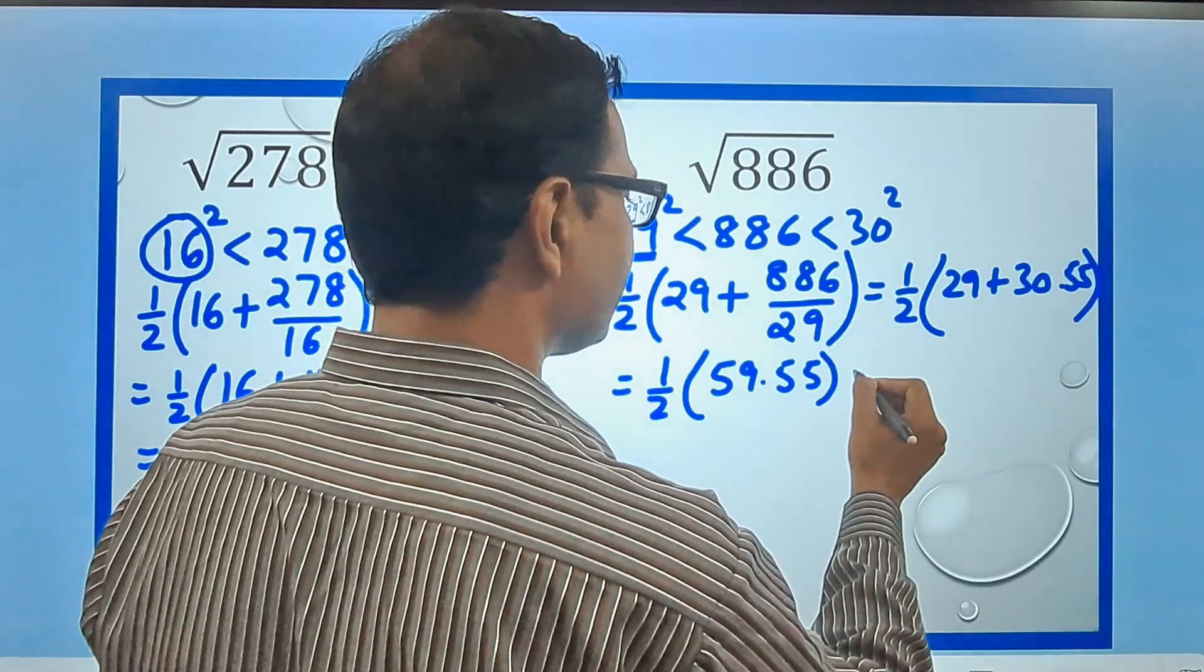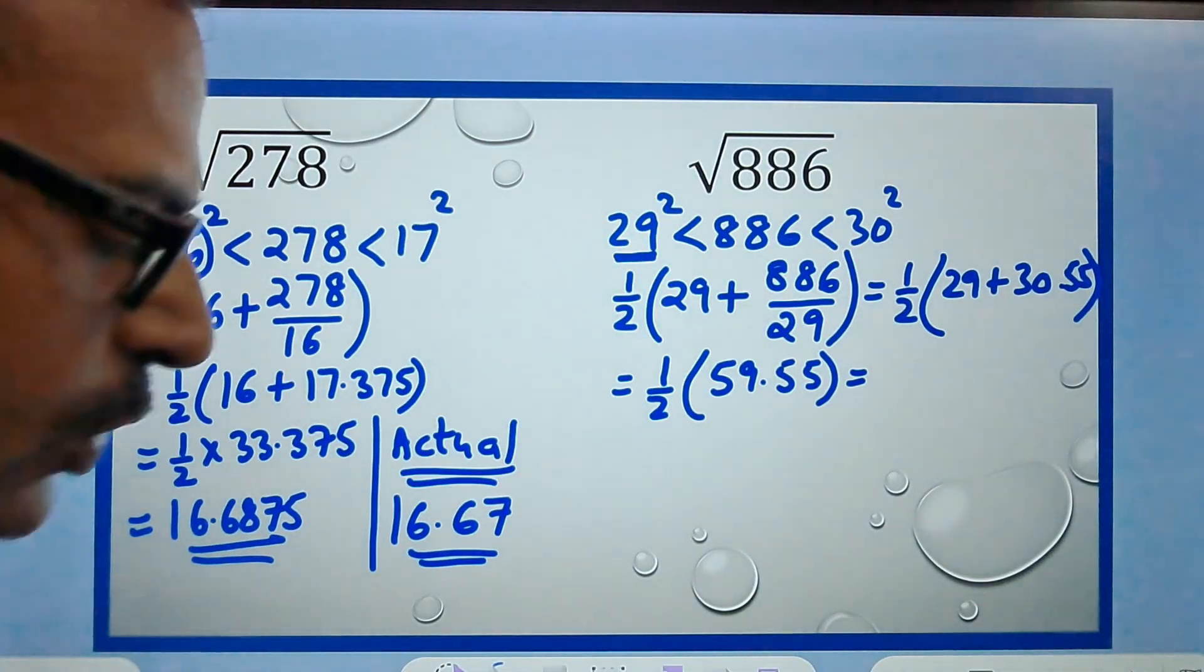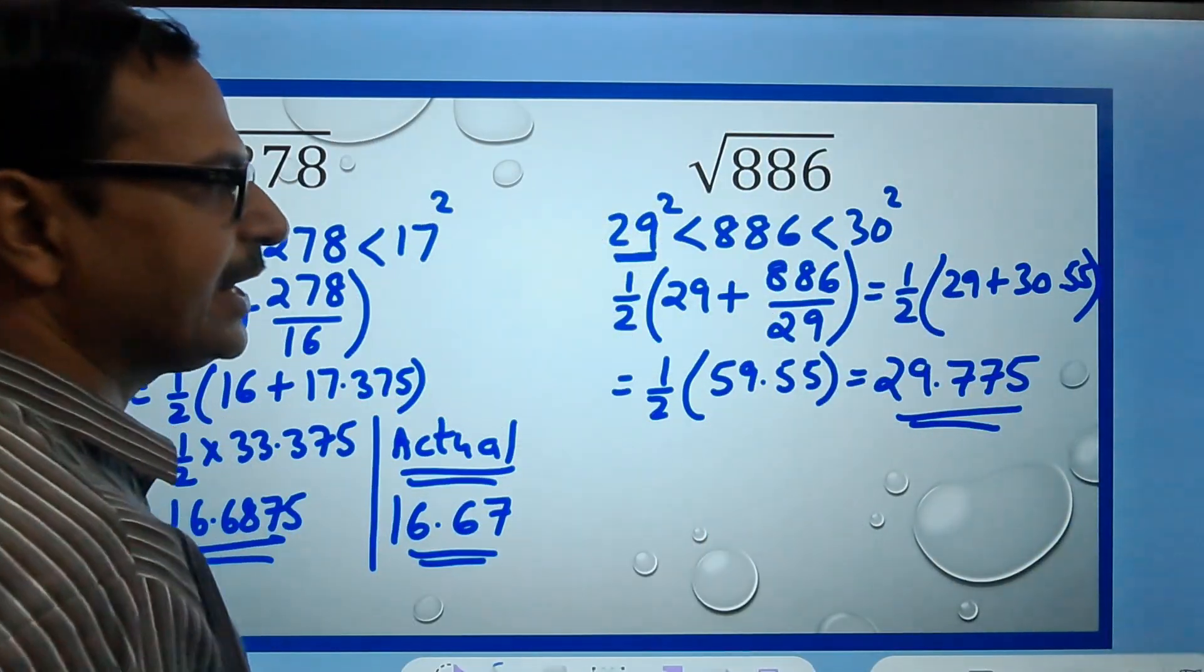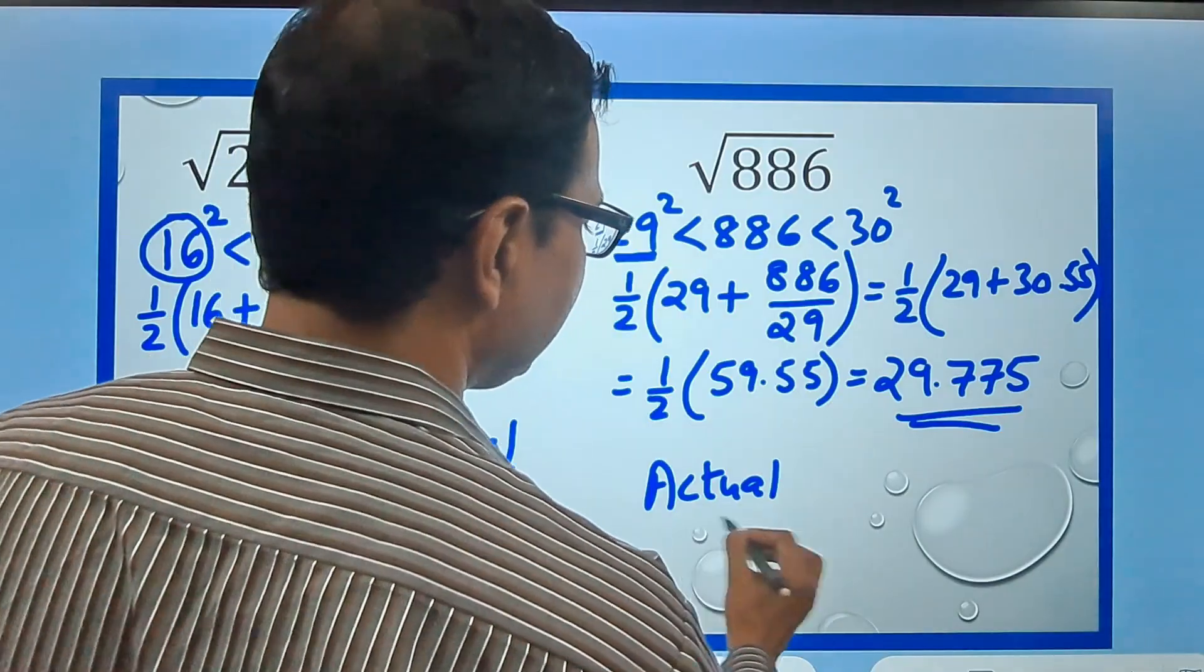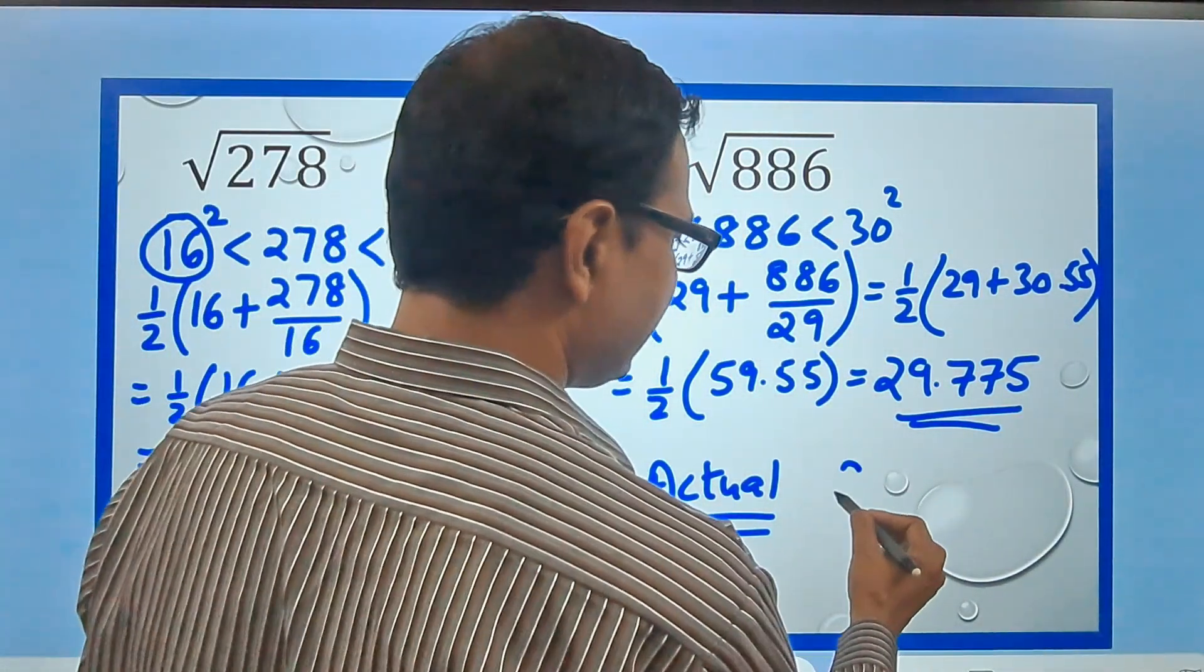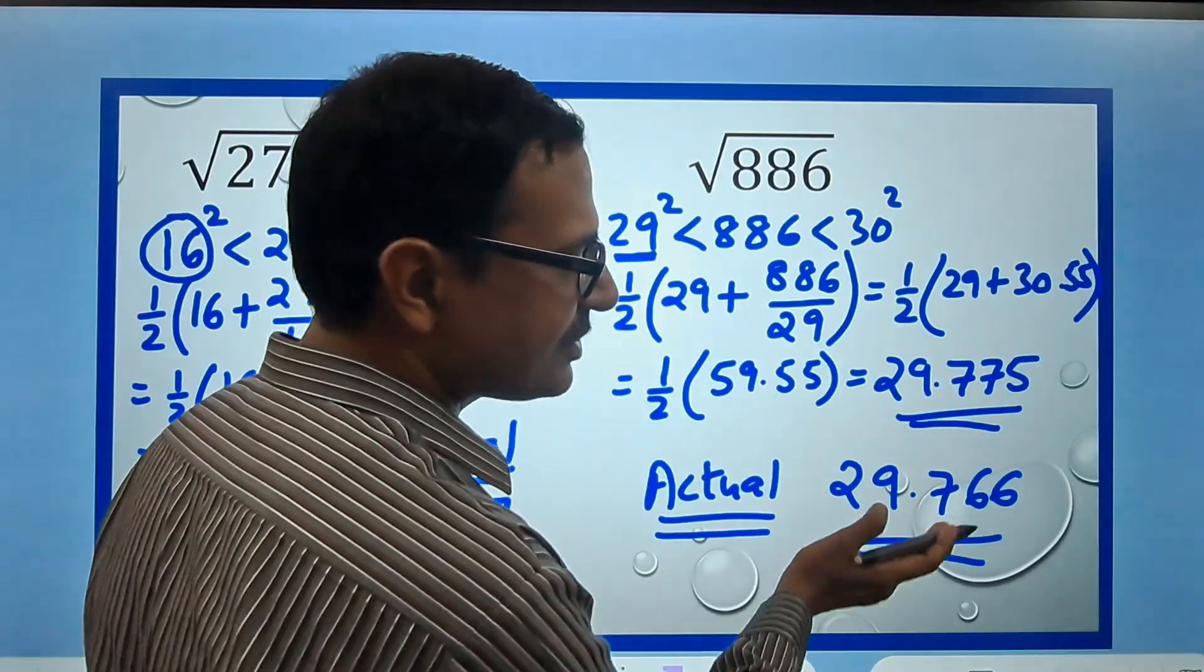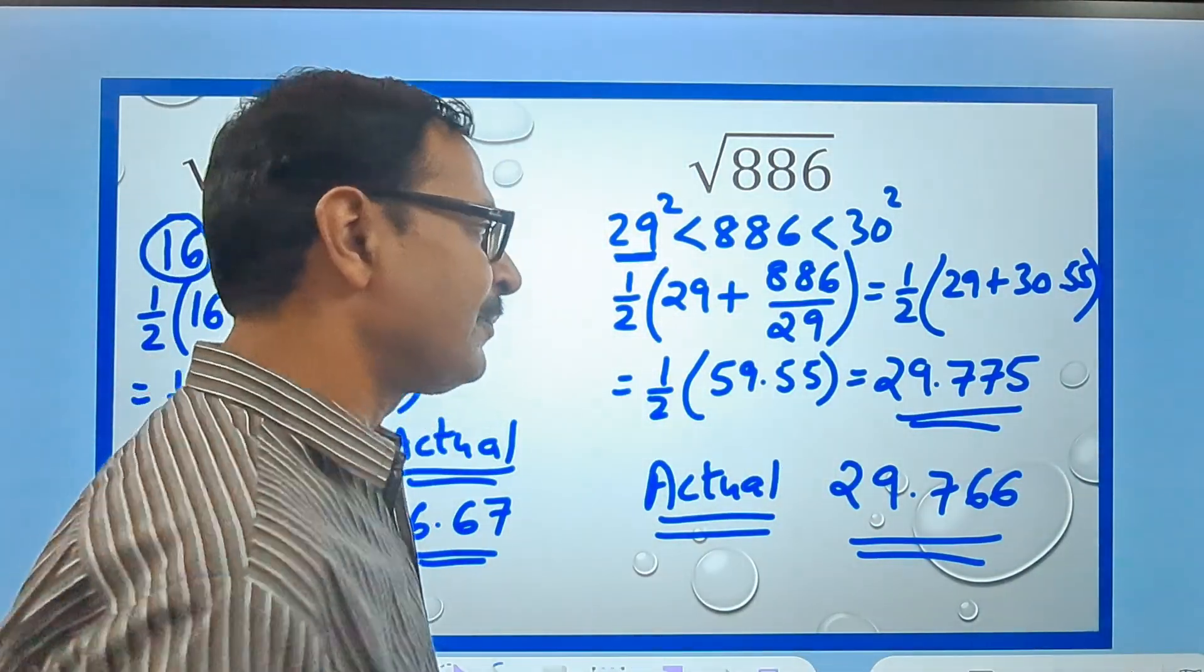The answer comes out to be, if you divide 59.55 by 2, 29.775. Now this is the approximate value of the square root of this number 886. And if you pick up the calculators again and check the actual value, this is 29.766. So all the answers which I am getting have a variation of just 0.01, which is 99.9% accurate answer.